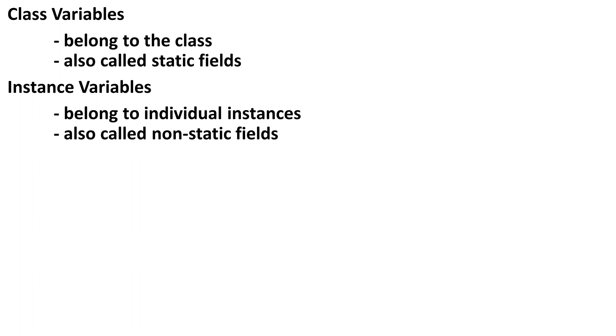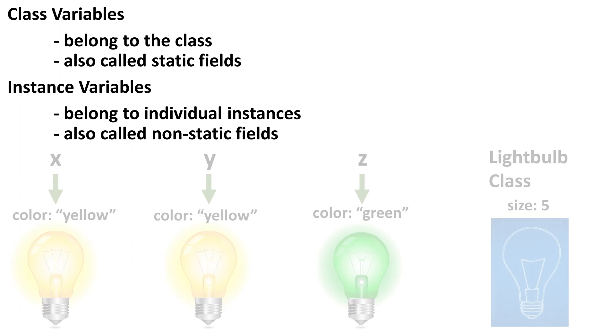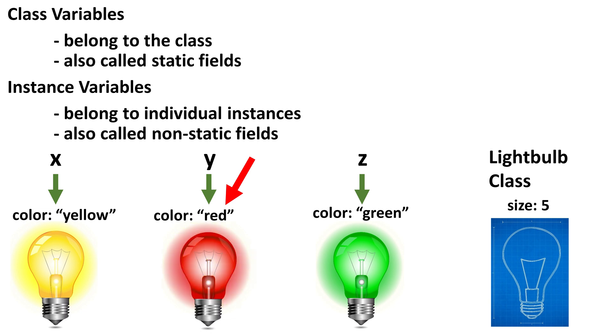Let's pull up the lightbulb class and some lightbulb instances again. The lightbulb class defines color as an instance variable. That means each instance has its own unique copy of the variable. When we change the value for the instance that y is pointing at, it only affects that one instance.